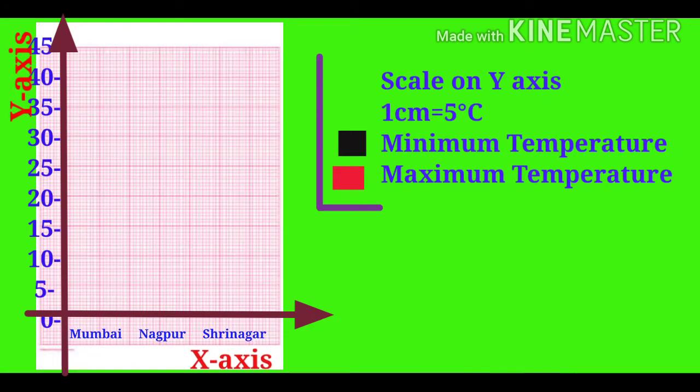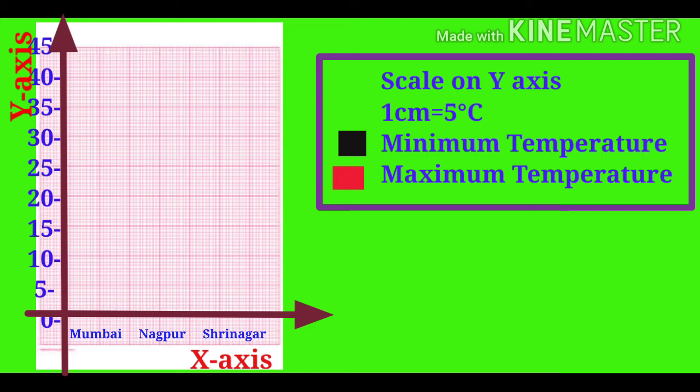Let's draw the graph. Students, on this graph, minimum temperature is shown by black color bar and maximum temperature is shown by red color bar. Mumbai: the minimum temperature is 20.5 degrees Celsius and maximum temperature is 32 degrees Celsius.